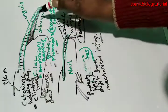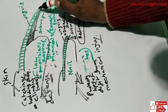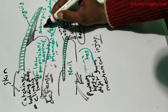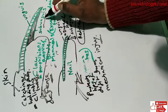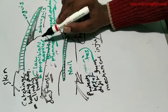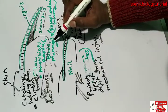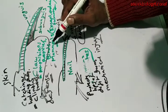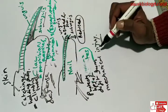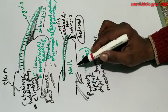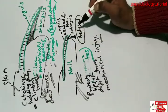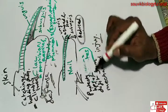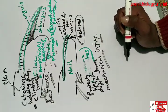To recap: a claw is made by a hard, pointed, narrow, curved dorsal plate called unguise and a less hard ventral plate called sub-unguise. It is found in few amphibians, almost all reptiles, birds, and mammals. Its functions include catching and holding prey, climbing trees, and defense. The nail has a broad and flat unguise, a softer and reduced sub-unguise, and its function is to protect the tips of digits from mechanical injury.